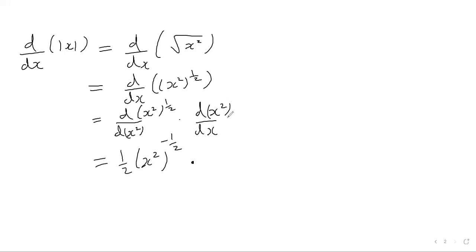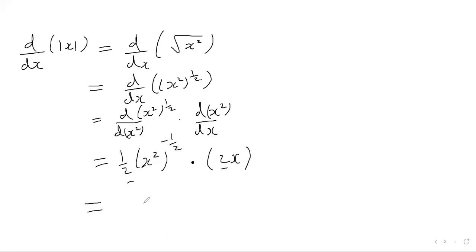Then for the second part, differentiating x squared with respect to x — we've done this before — it's just two x: bring the power to the front and take one from the power of x. So we get a half times two, which gives us one, and then we have x squared to the power of one over two — which is the square root of x squared — multiplied by x.